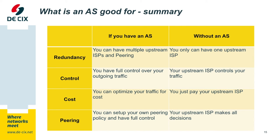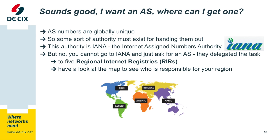What is an autonomous system good for? If you have an autonomous system, you can have multiple upstream ISPs and peering. You have full control over your outgoing traffic, you can optimize it for cost, and you can set up your own peering policy. Without an AS, you are basically at the mercy of your upstream ISP and cannot do much except accept however they are routing you. So this sounds good — you want an AS number? Get one.